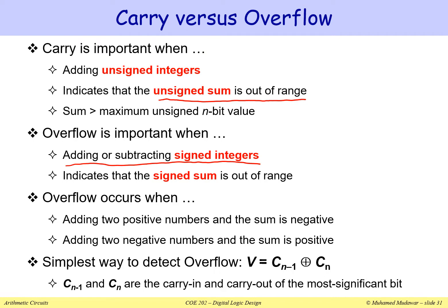The hardware has a simple way to detect overflow. It can look at the carry into the most significant bit and the carry out. If these carries are identical, then there is no overflow. If these carries are different, then there is overflow. So the hardware checks for overflow by XORing Cn-1 with Cn.